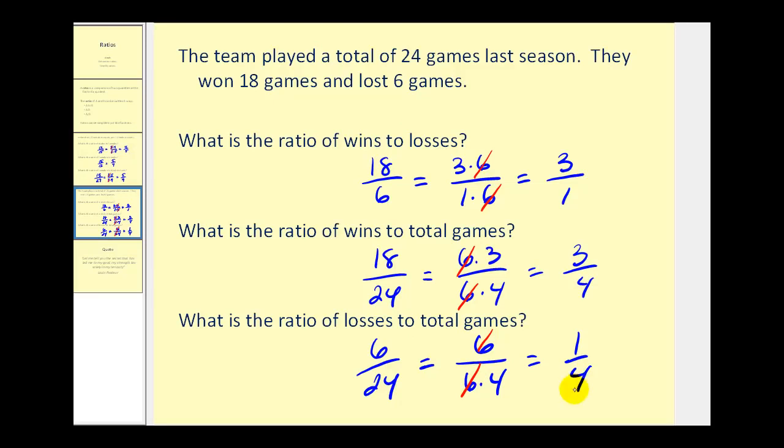Hopefully that should make sense, because if the ratio of wins to total games was 3 to 4, then the ratio of losses to total games should be 1 to 4, accounting for all of the games played.